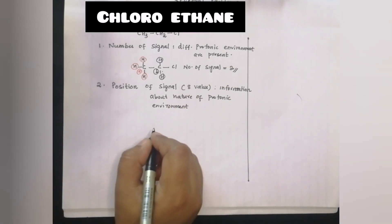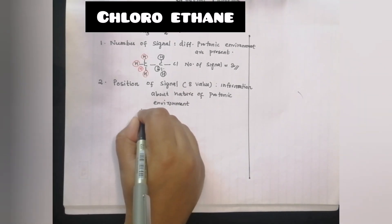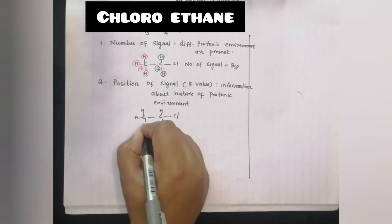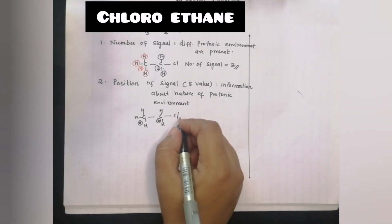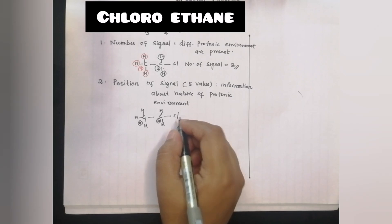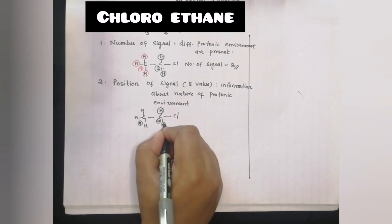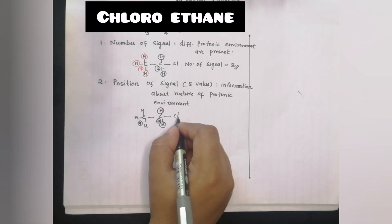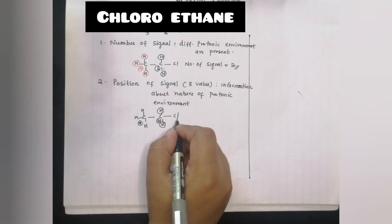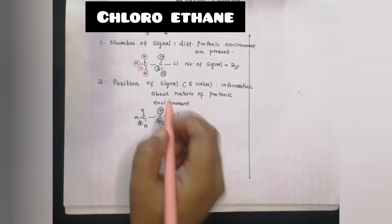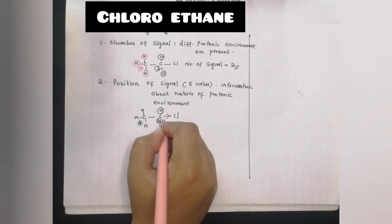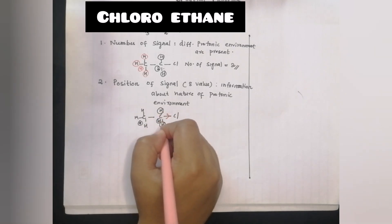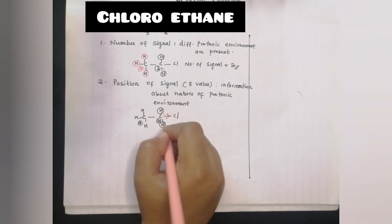Let's discuss it again. We have a compound — CH3, CH2, Cl. This is A type and this is B type. We have a component of the proton environment. The second group is chlorine, which is an electron-withdrawing group — it has a minus inductive effect. This reduces electron density on the two CH2 protons, causing deshielding.